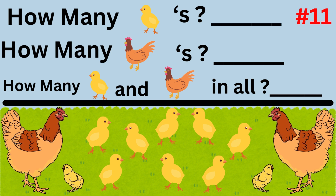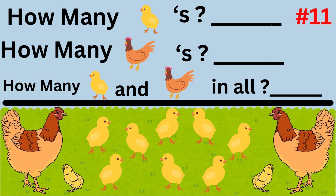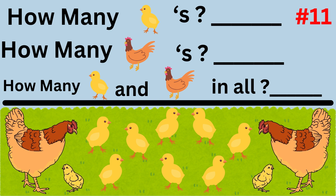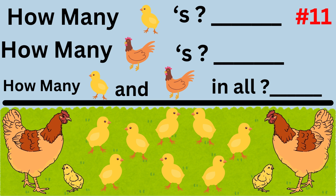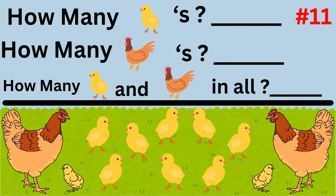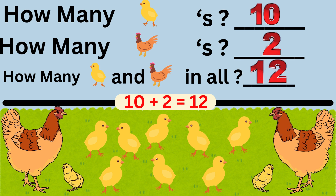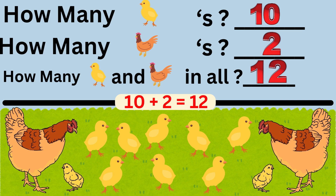Word problem number eleven asks: how many chicks are there, how many hens are there, and how many chicks and hens in all? The answer is there are 10 chicks and two hens, so there are a total of 12 chicks and hens together. The number sentence is 10 plus 2 equals 12.